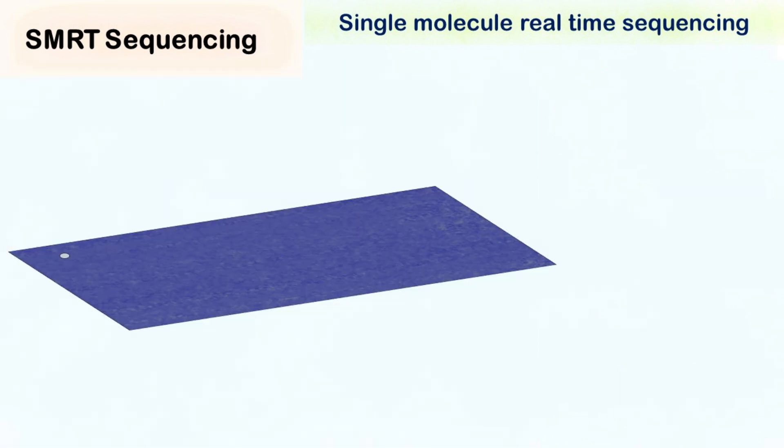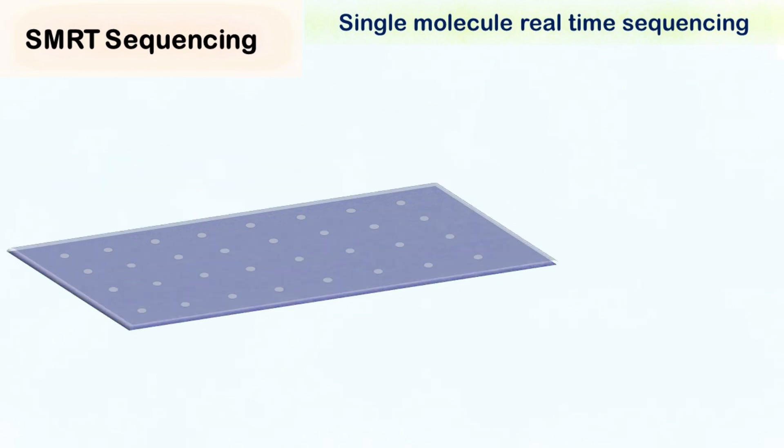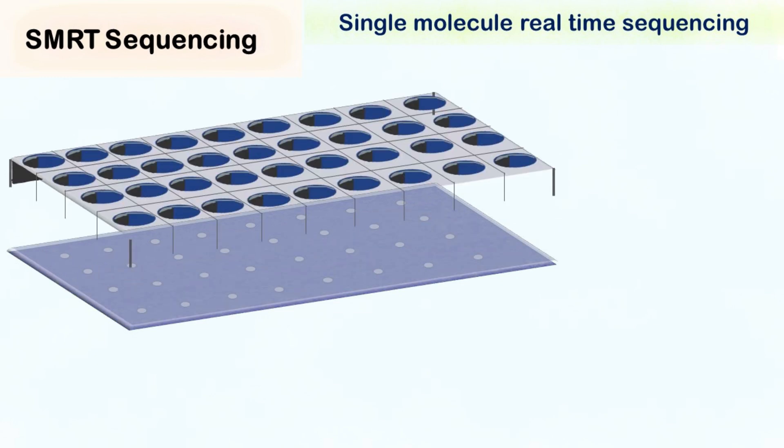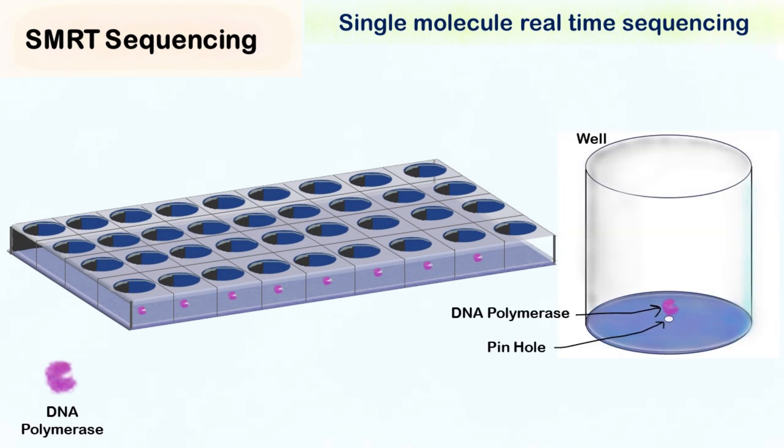A thin sheet of metal with many tiny pinholes is covered with a thin sheet of glass. This is covered with many tiny wells or tiny chambers in which sequencing process will be carried out. The enzyme DNA polymerase is immobilized at the bottom of each well where we have the pinhole.